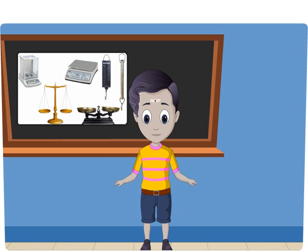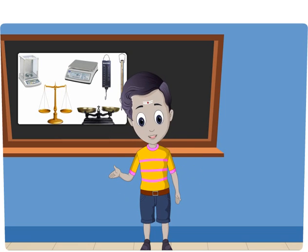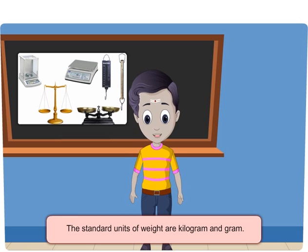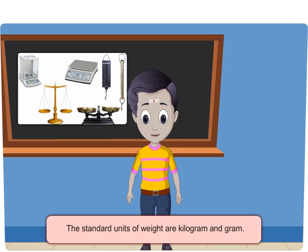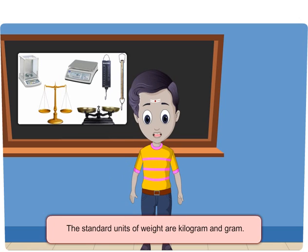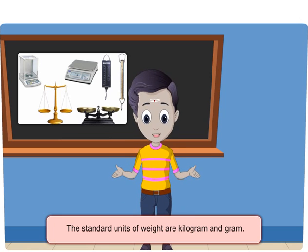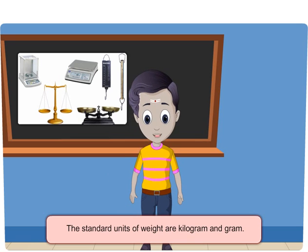Friends, all of us know the need for standard units of weight. The standard units of weight are kilogram and gram. Kg is the short form of kilogram. G is the short form of gram. 1 kilogram is equal to 1000 gram.